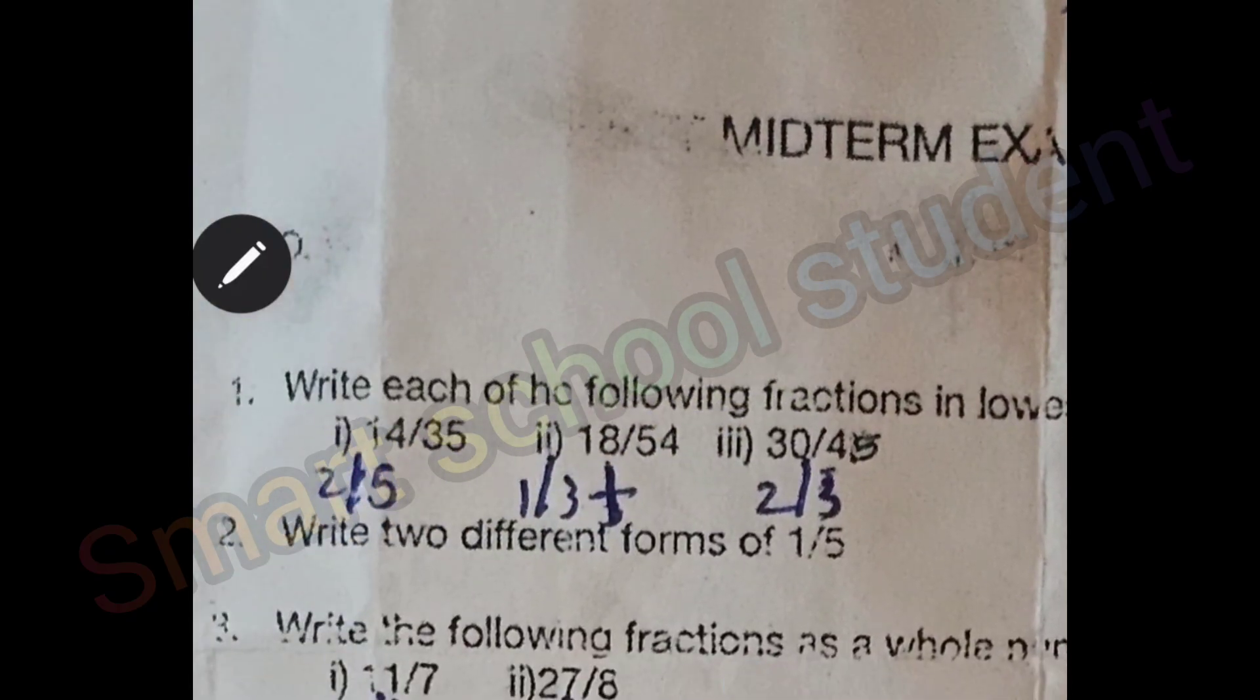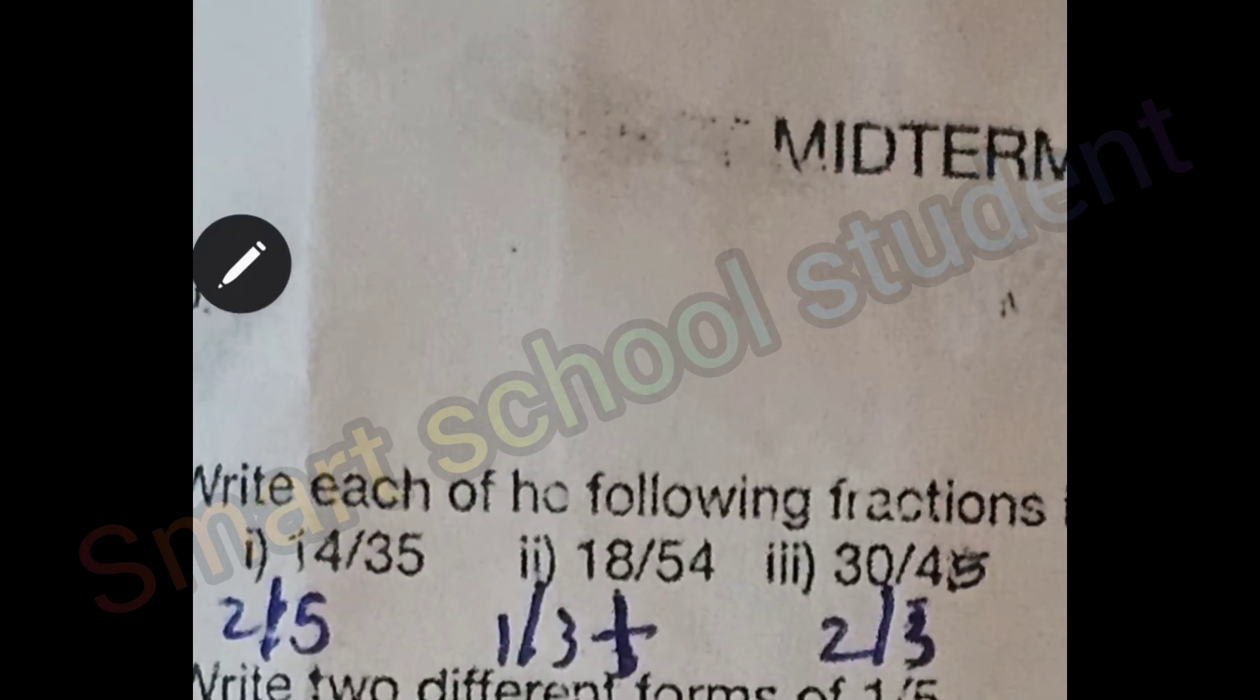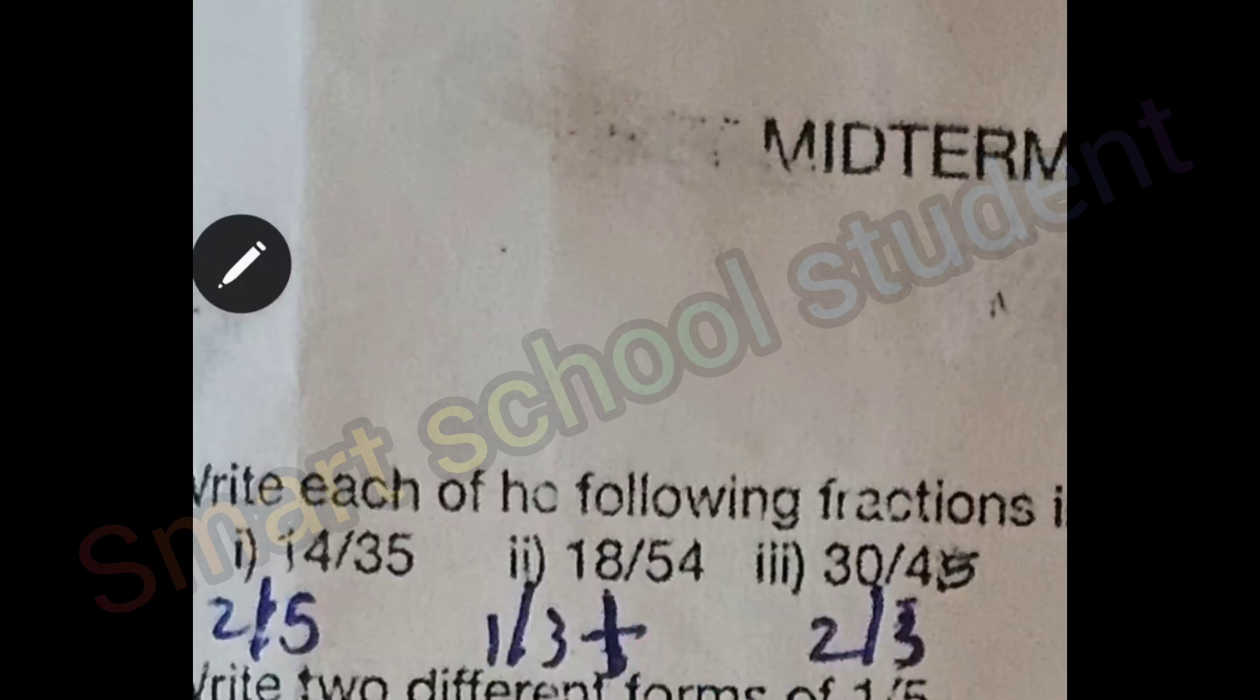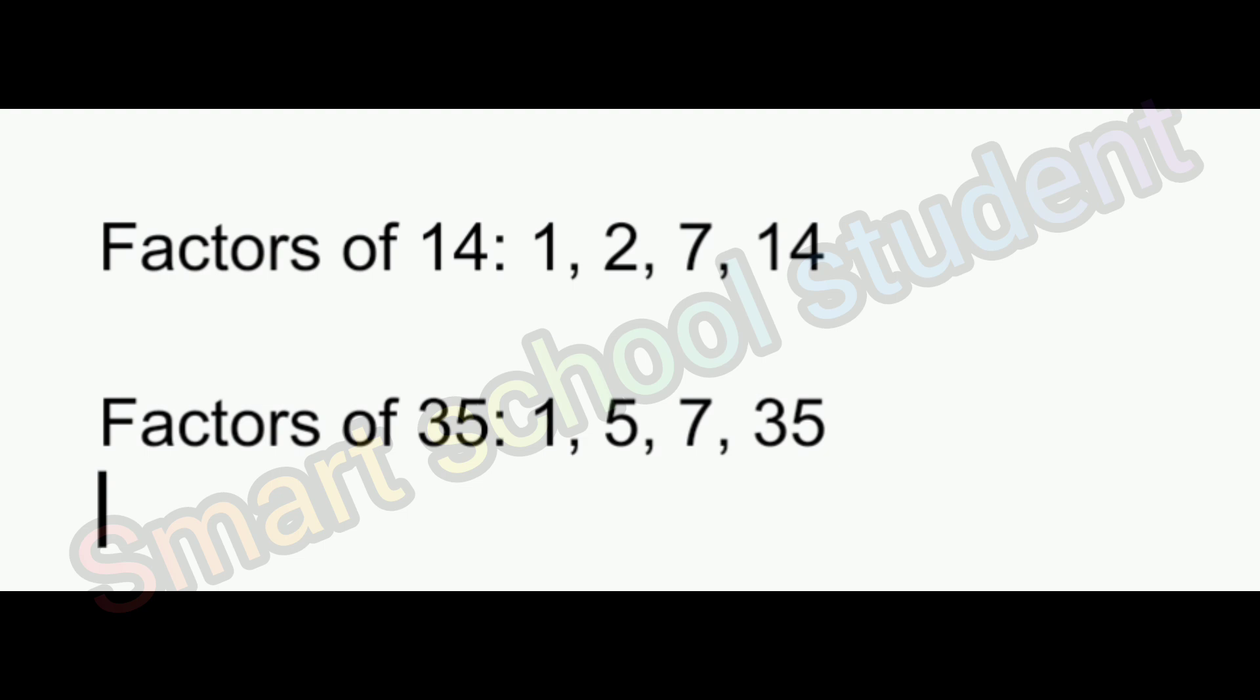The first question is 14 divided by 35, second question is 18 by 54, third question is 30 divided by 45. How do we get the answer? You will use the greatest common divisor.